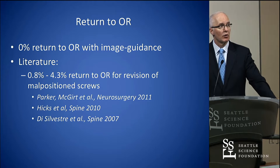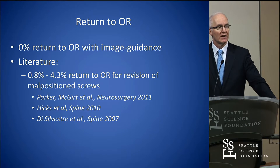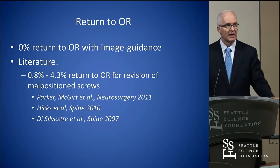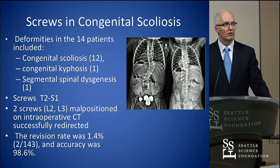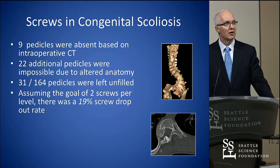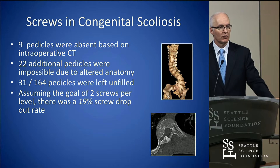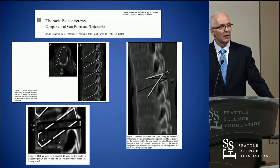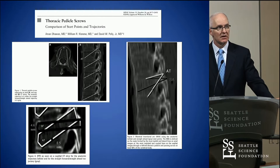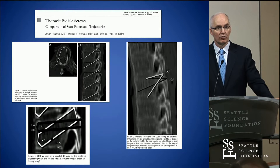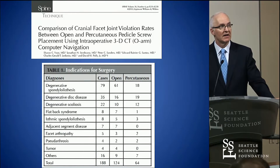My return-to-OR rate has been 0% in 10 years now, with literature ranging from 1 to 4%. The Vancouver study presented earlier had a 6% rate. We also looked at congenital scoliosis, and found we were equivalently accurate, but 19% of the time there was no pedicle present to put a screw through — so navigation really helped us there. We also learned that sometimes the anatomy requires a slightly different trajectory to get an adequate bone channel, and navigation allows that.